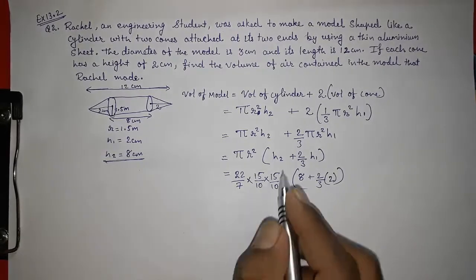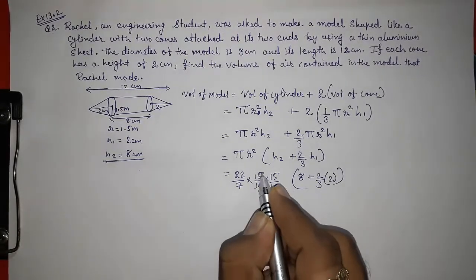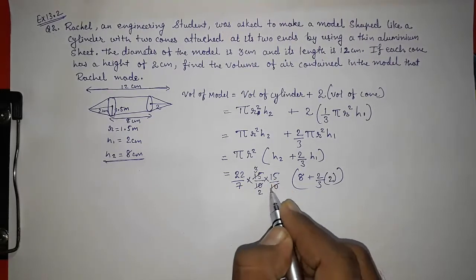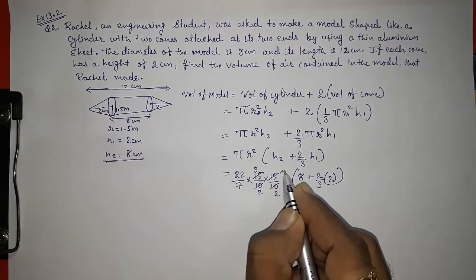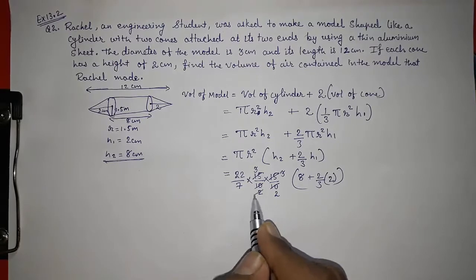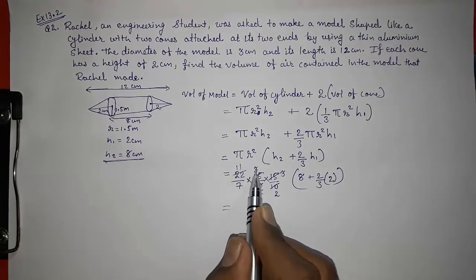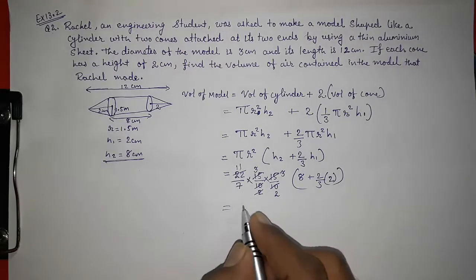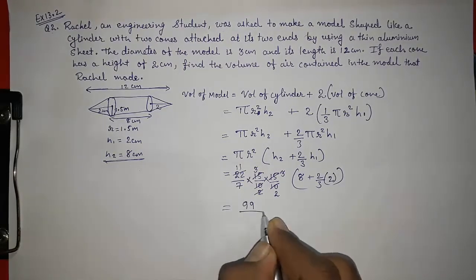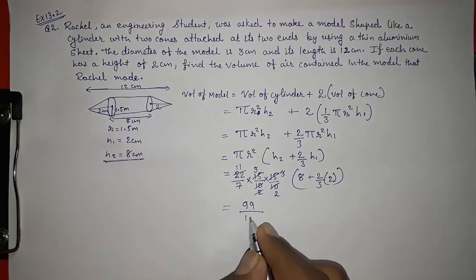So now we are going to cancel. 5, 2, 5, 3. Again 5, 2 and 5, 3 here. Still we can cancel. It's 2 and 11. So you can see 11, 3 into 3, 3 is 9 into 11, 99. And in the denominator 7 into 2, 14.